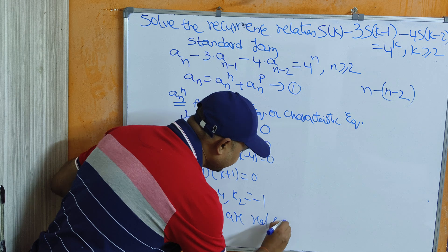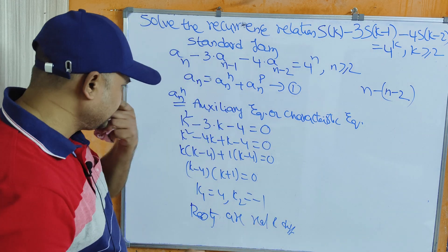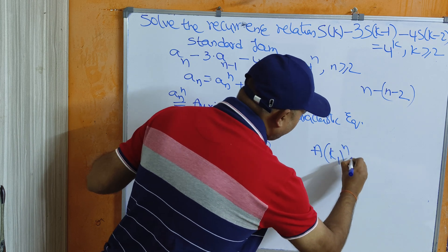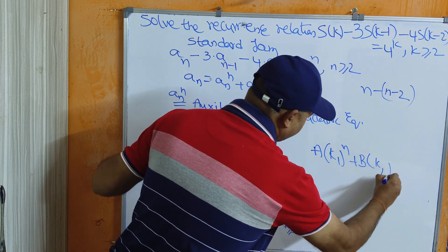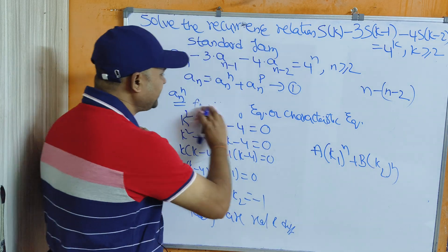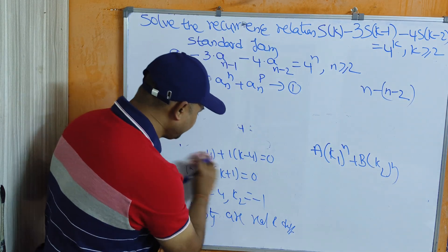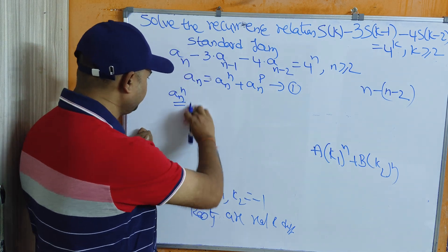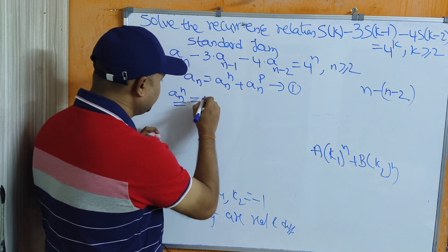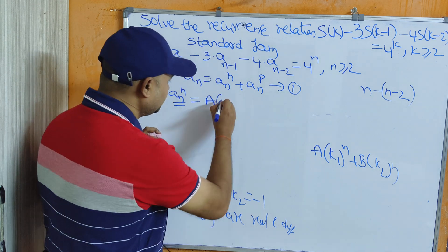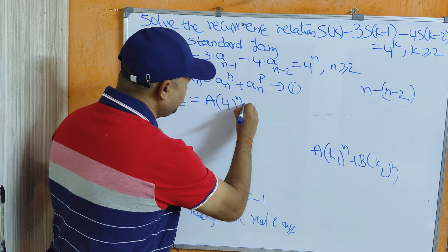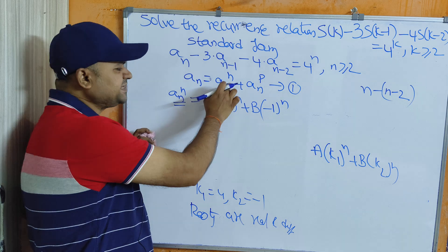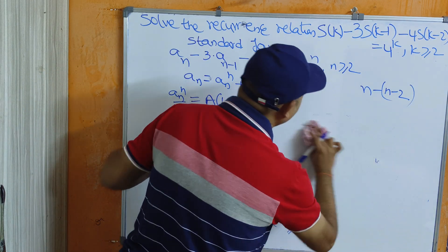Since the roots are real and different, the general solution is a·k₁^n + b·k₂^n. Here k₁ = 4 and k₂ = -1. So the homogeneous part is: a_n^(h) = a·4^n + b·(-1)^n. The homogeneous part is now calculated.